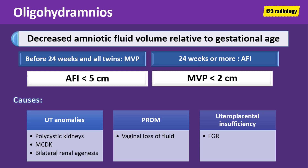Oligohydramnios is defined as decreased amniotic fluid volume relative to gestational age. Before 24 weeks of gestation in singleton and in all twins, we measure the maximum vertical pocket. At 24 weeks and later, we measure the amniotic fluid index. An amniotic fluid index less than 5 centimeters or maximum vertical pocket less than 2 centimeters indicates oligohydramnios.